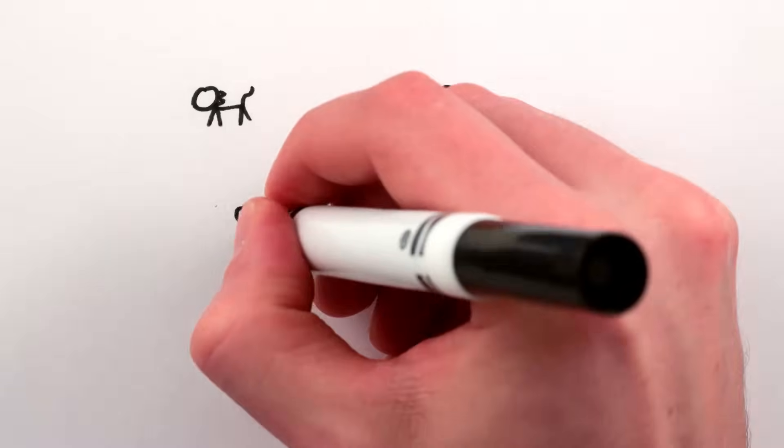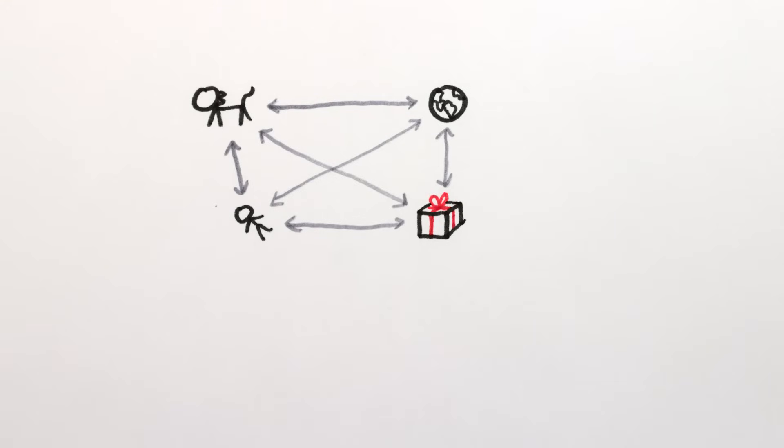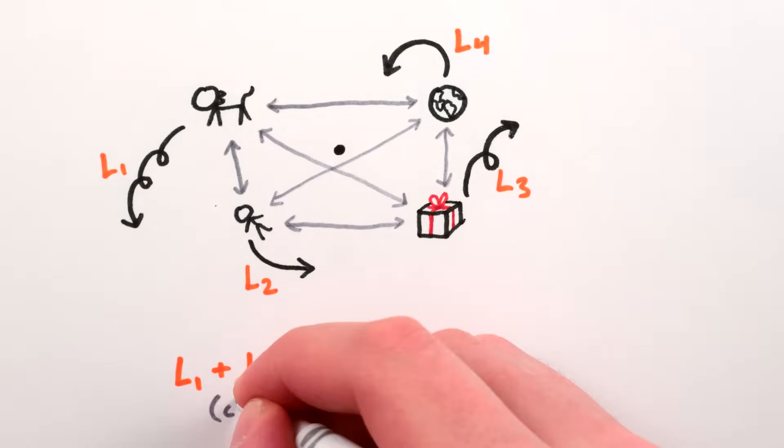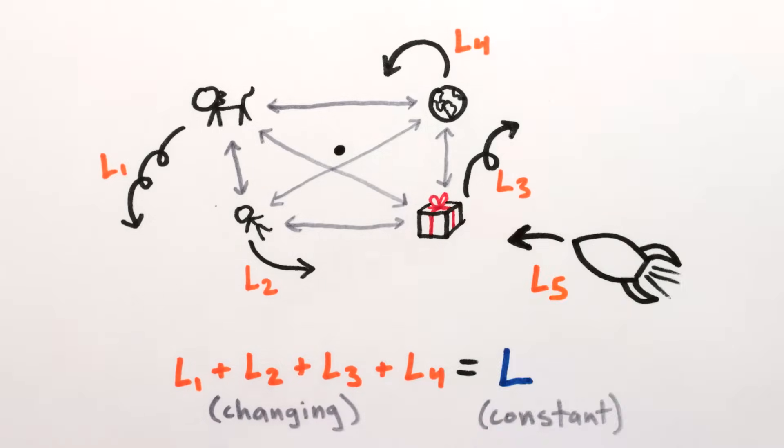The reason we care about angular momentum is that if you take a bunch of objects that are interacting electromagnetically or gravitationally or whatever, and add up all of their angular momenta into one number, then that total value won't change over time. Unless some other objects from outside come in and mess things up.